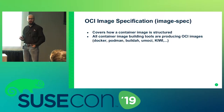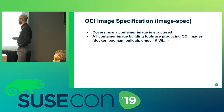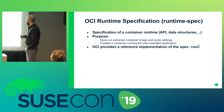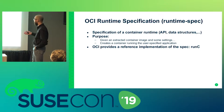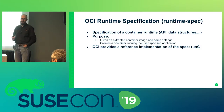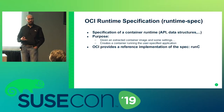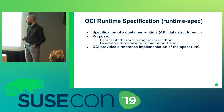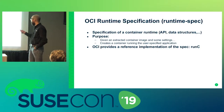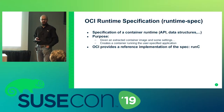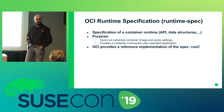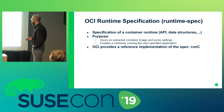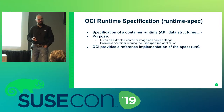All these tools produce images that follow the OCI image specification, which allows you to take the image and run it with any container engine that follows the second specification — the runtime specification. The runtime specification describes how a container runtime can be invoked, what API it must expose, and what data structures are used during communication. The goal is to allow anybody to create new runtime implementations that can consume standard images.